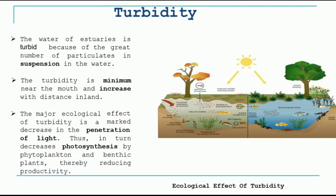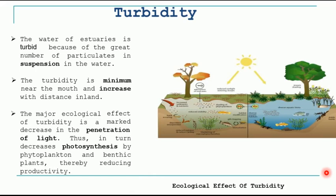The next important abiotic factor is turbidity. As turbidity of water increases, sunlight cannot penetrate to the bottom, so the primary productivity of plants and other producers decreases. This results in fewer consumers — primary, secondary, and tertiary. On the other hand, if there is less turbidity, sunlight penetrates deeper, there is more production by producers, and the ecosystem is more healthy. Turbidity decides the primary productivity of the estuarine ecosystem; it is minimum near the mouth of the estuary and increases with distance inland.